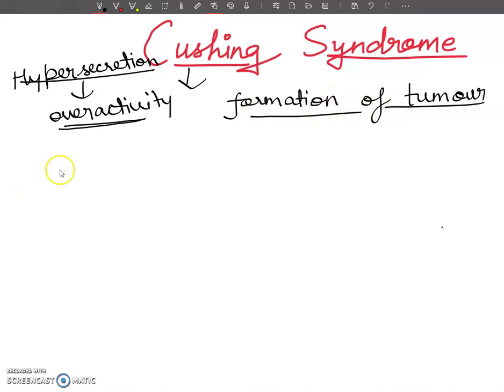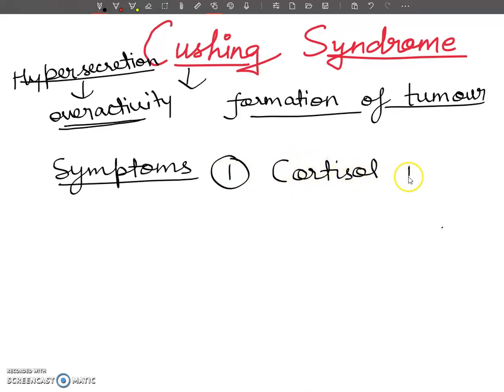Next we will talk about what symptoms will be in Cushing syndrome. If a person has Cushing syndrome, the first symptom is the cortisol hormone oversecretion.